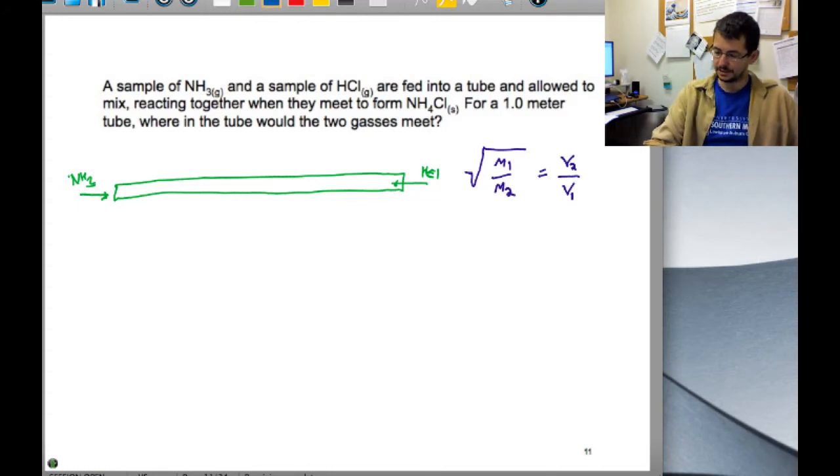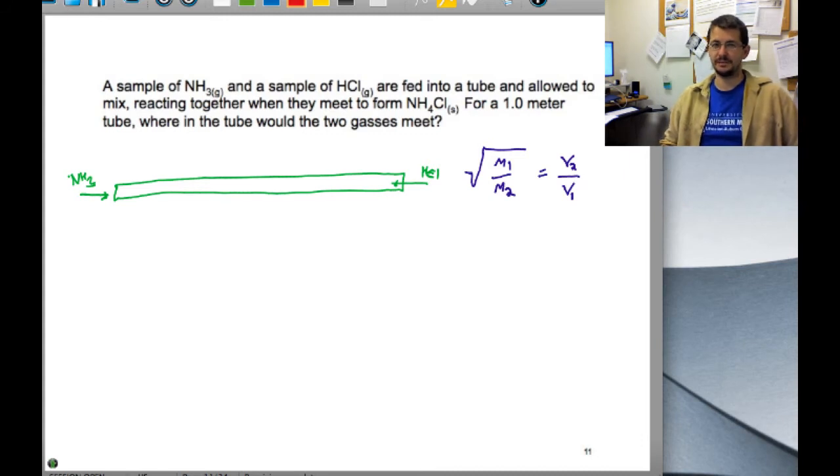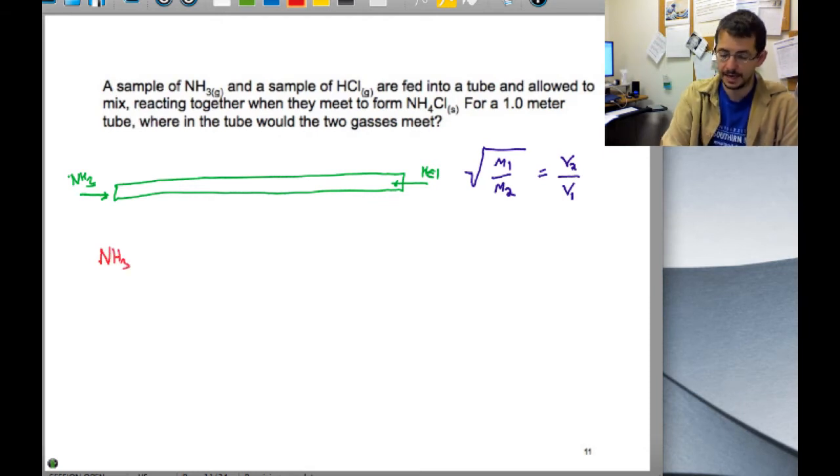This seems like one of those problems where there's not enough information to solve the problem. But what it comes down to is that one of them is going to be traveling faster than the other. Which one? Well, we know that the lighter gases will travel faster, so ammonia will travel faster.